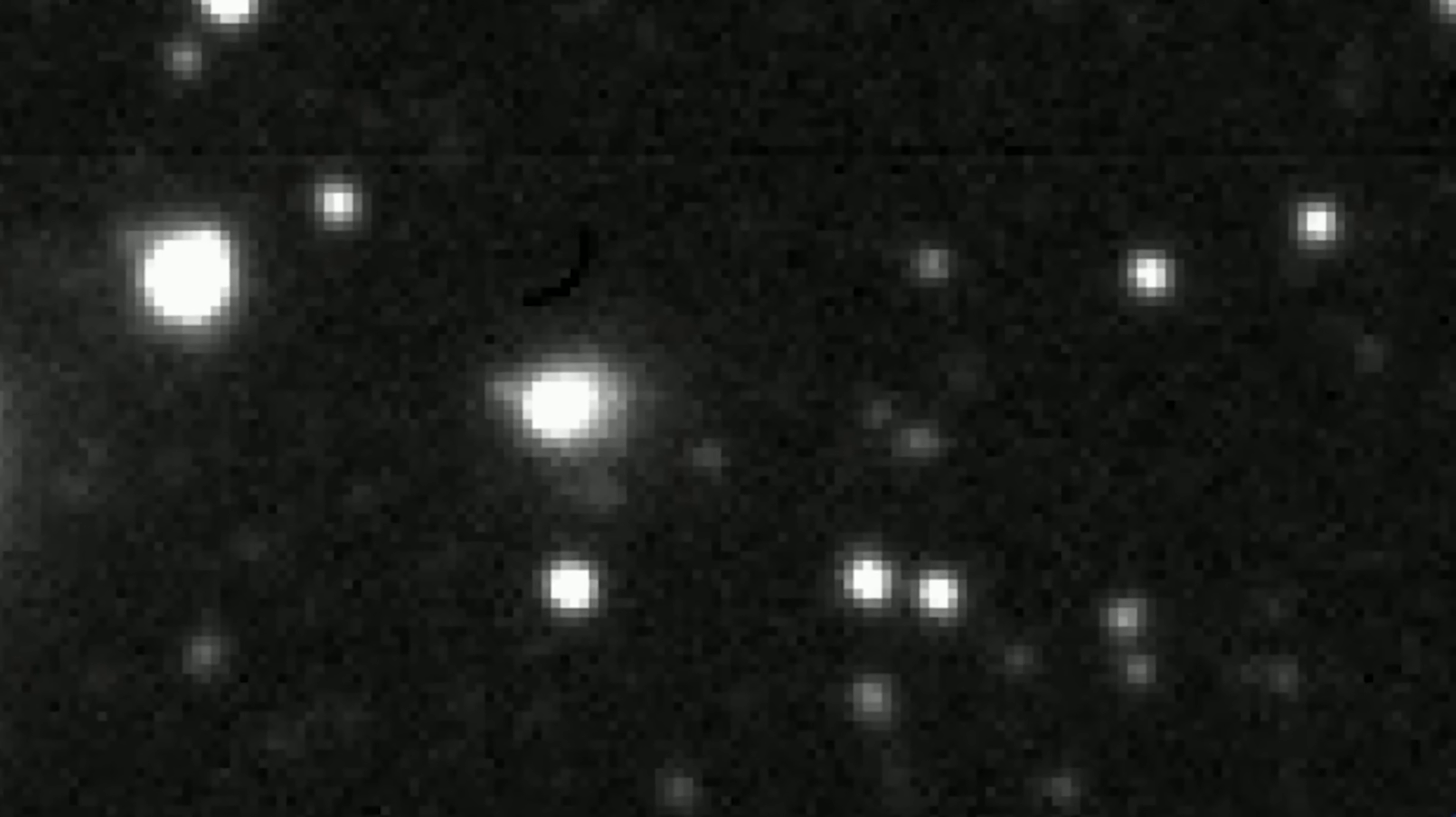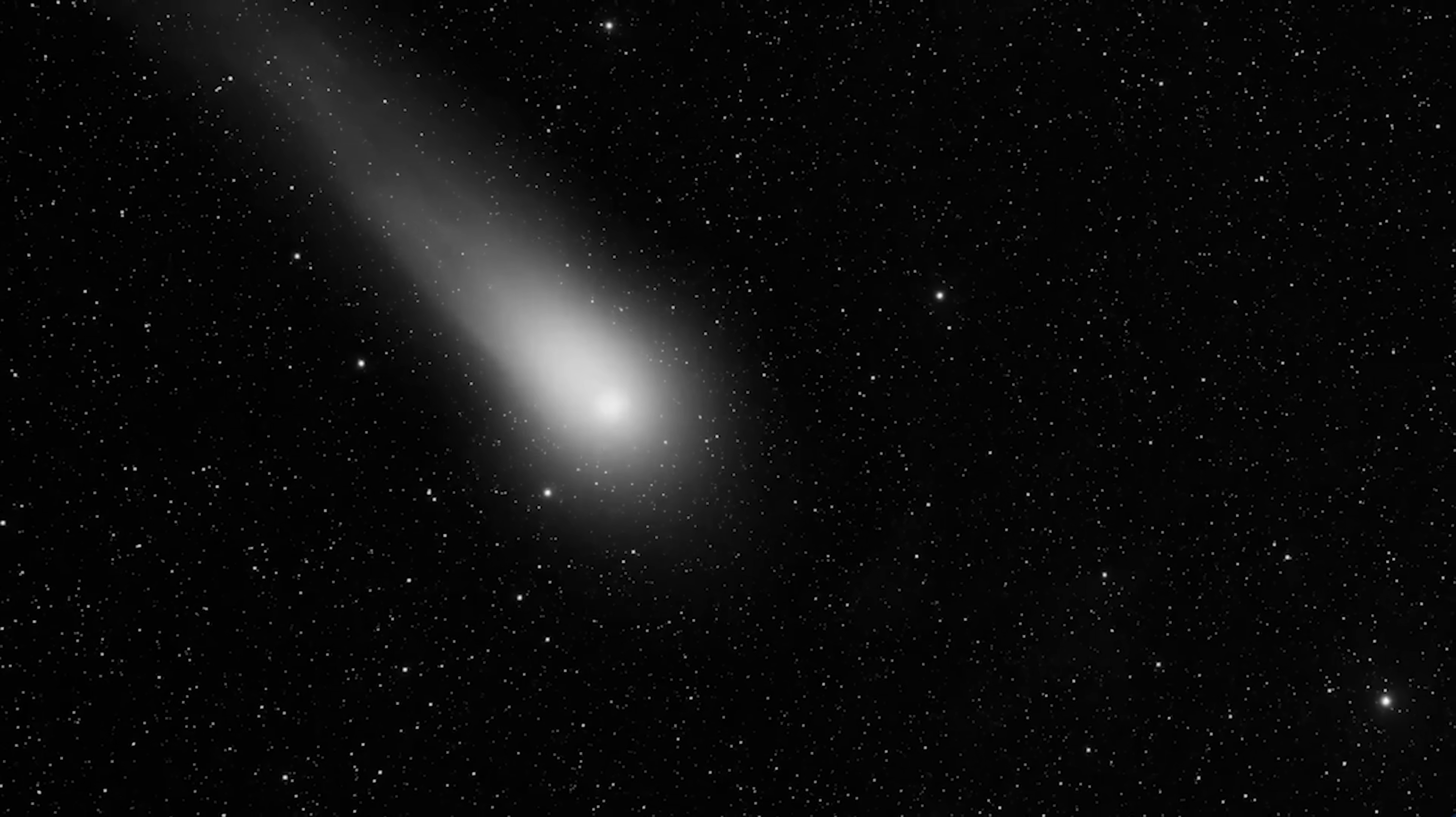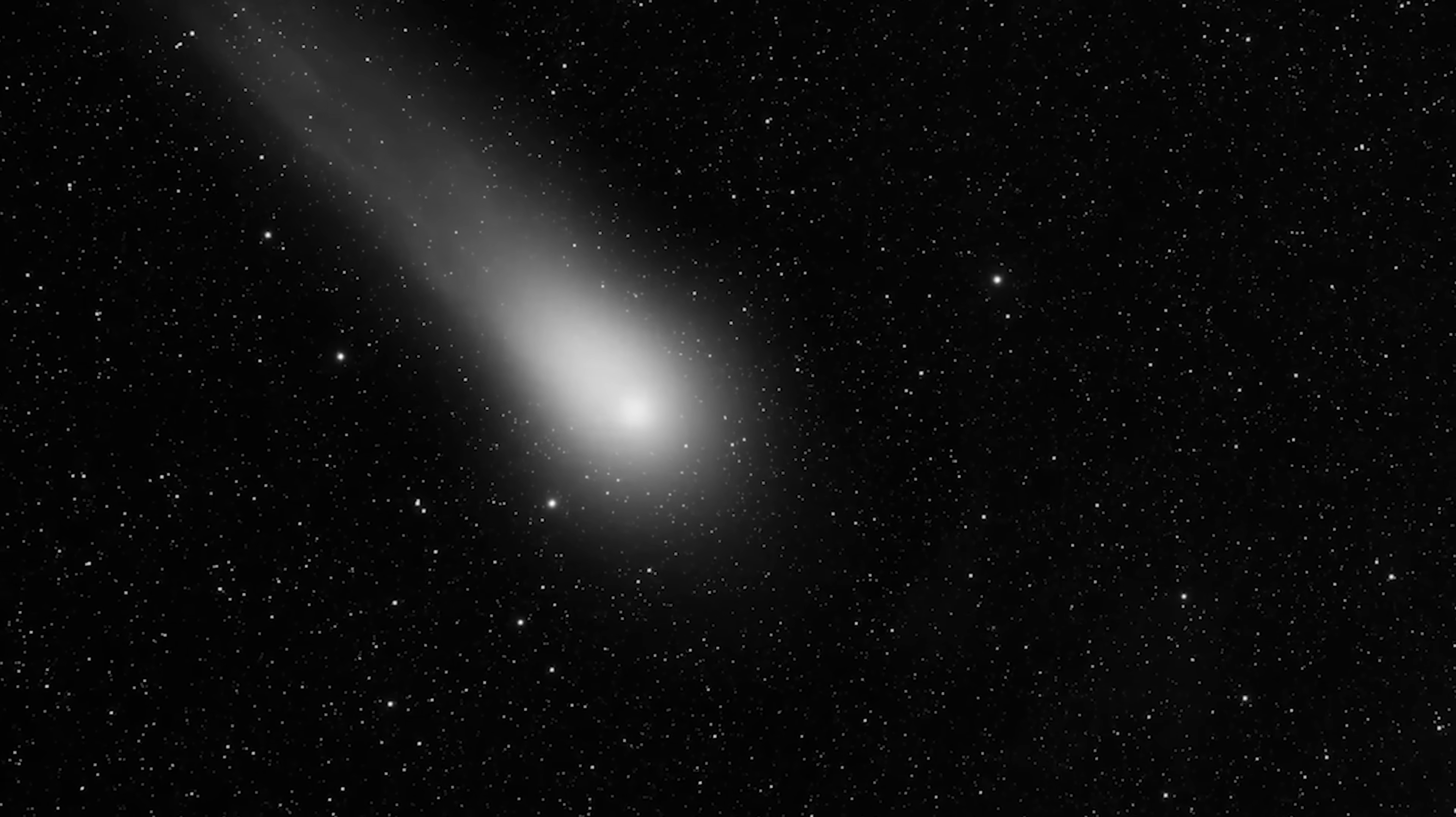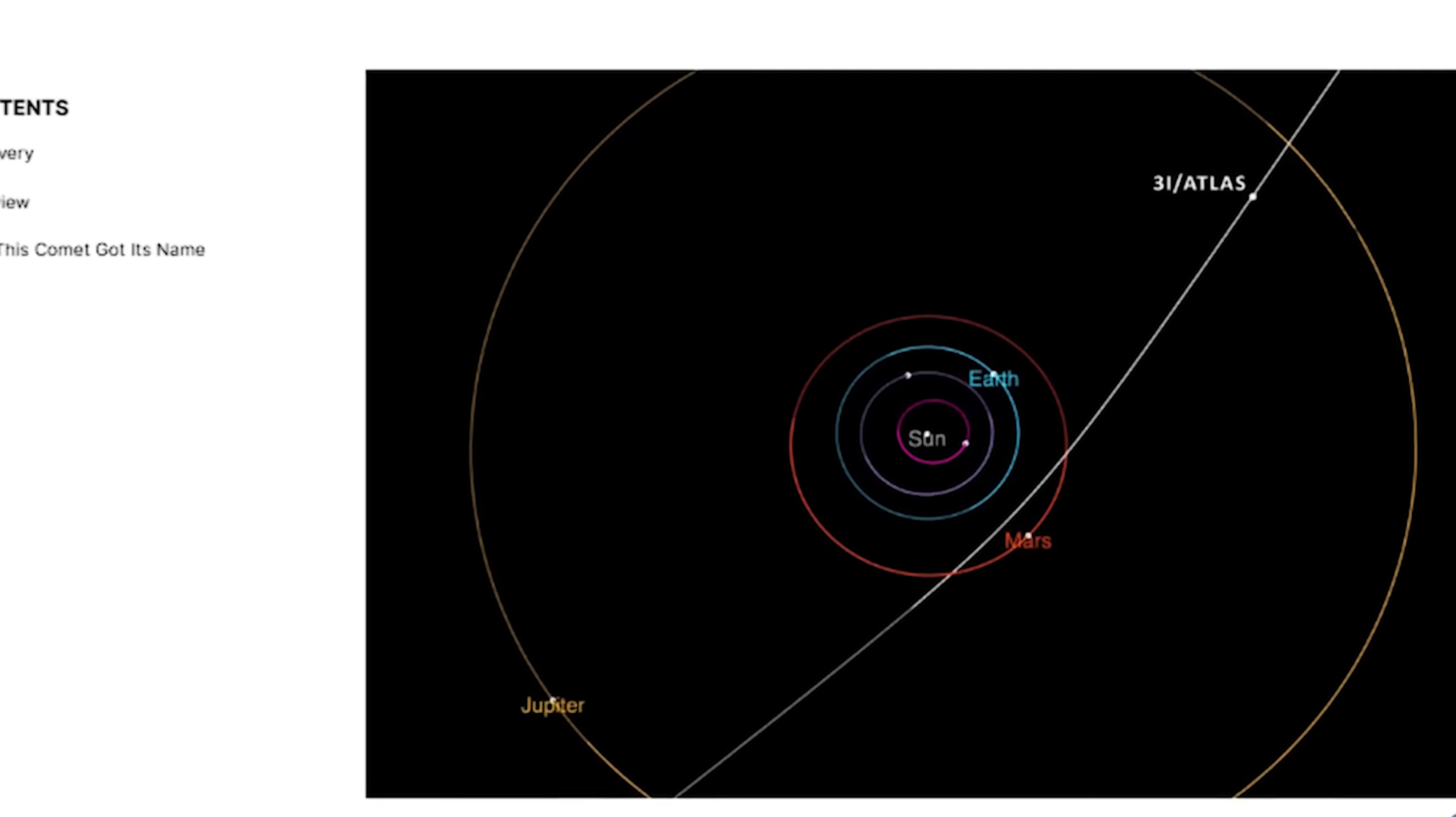So in our last series, we talked about the jaw-dropping arrival of 3i Atlas, an interstellar visitor that zipped into our solar system in July 2025. Well, hold up because things are about to get even stranger.